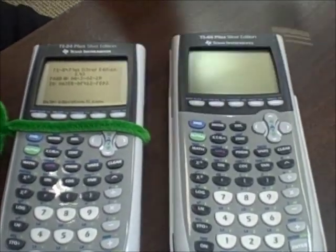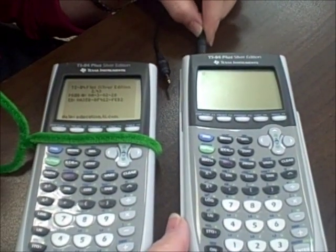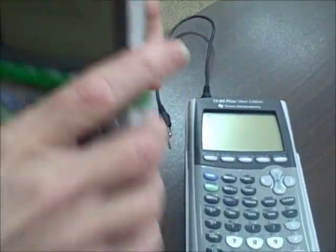The first thing you do is you take your IO cord and you connect them. You can also use the mini-USB to mini-USB cord if you've got that.